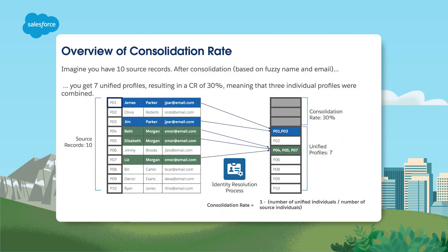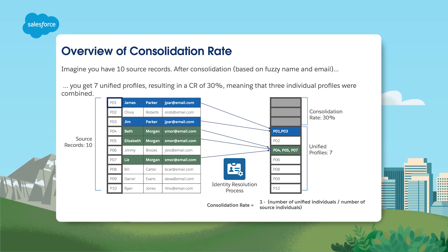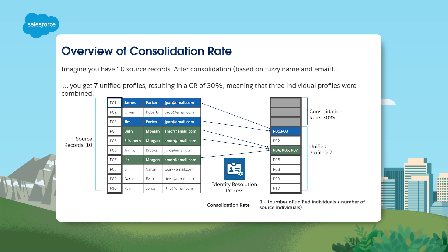There is a statistic called the consolidation rate, or CR — a metric that shows how source profiles are grouped to form unified profiles. To calculate it, subtract the number of unified individuals divided by the number of source individuals from one. For example, if you have 10 source records and from those you end up creating seven unified profiles based upon your rule set, the consolidation rate would be 30%.